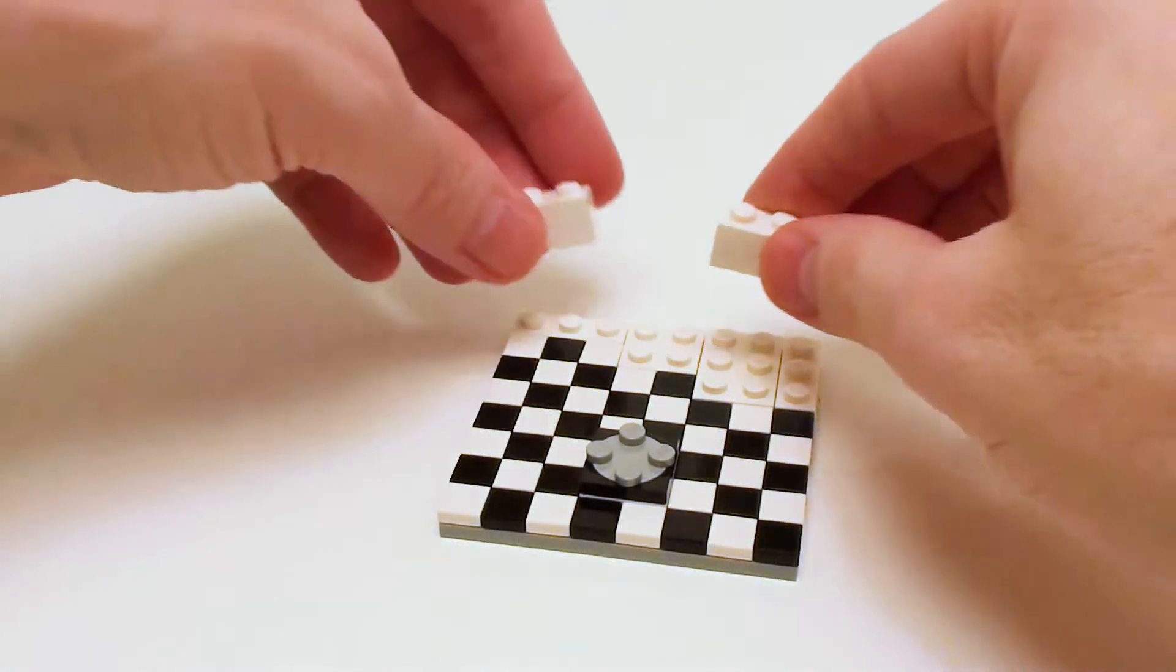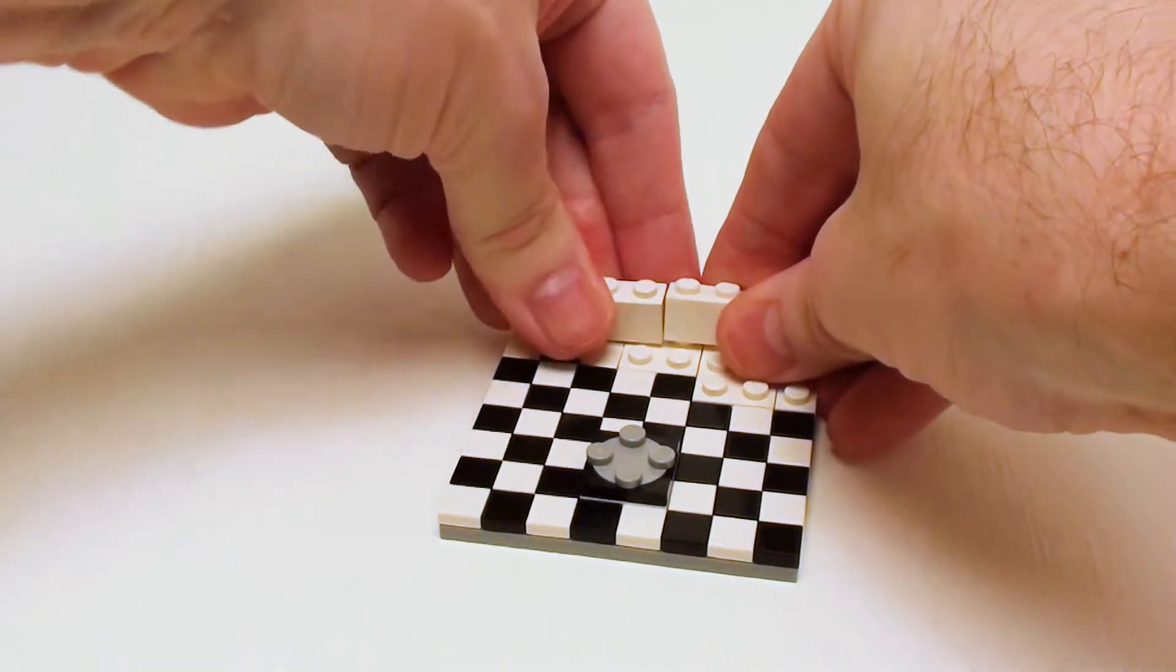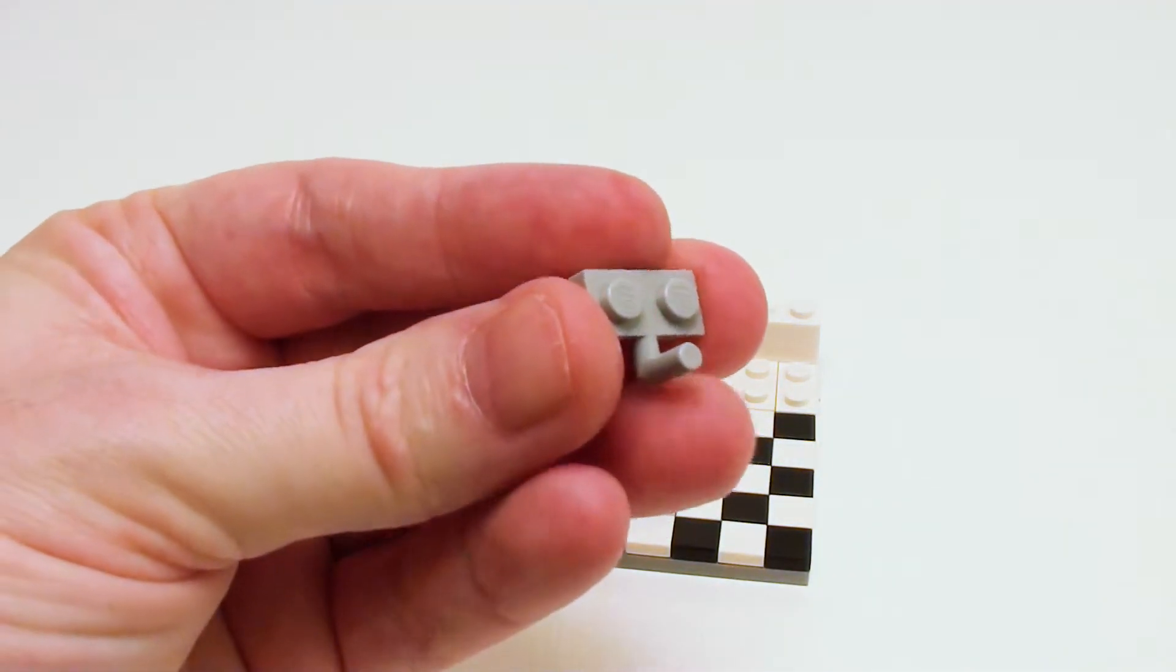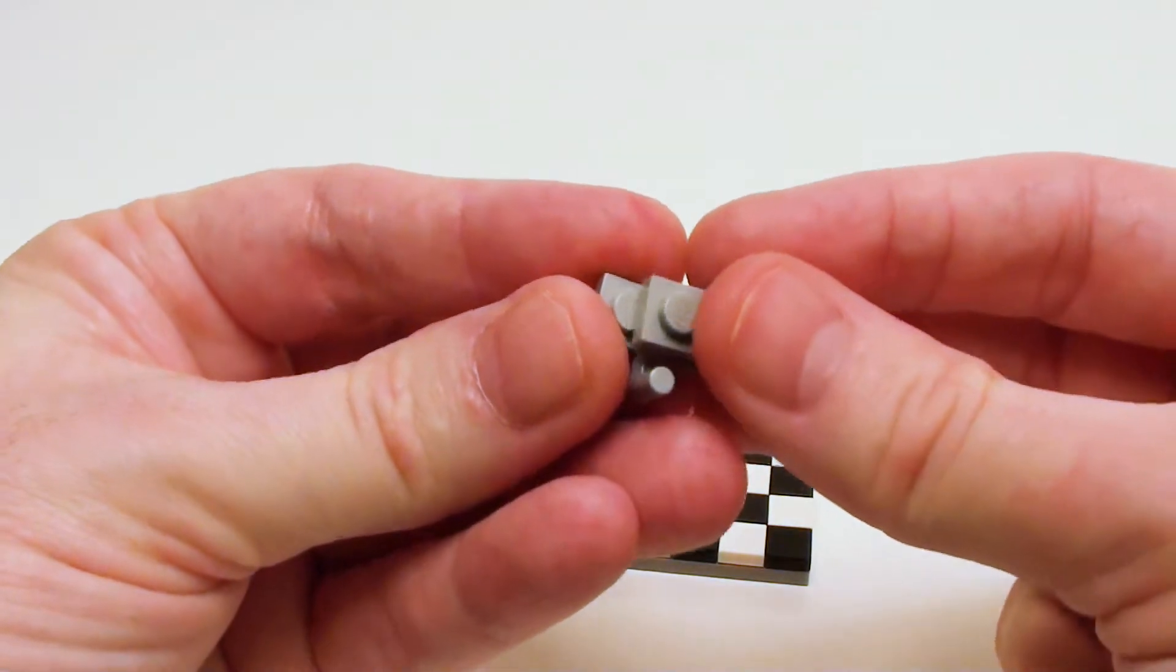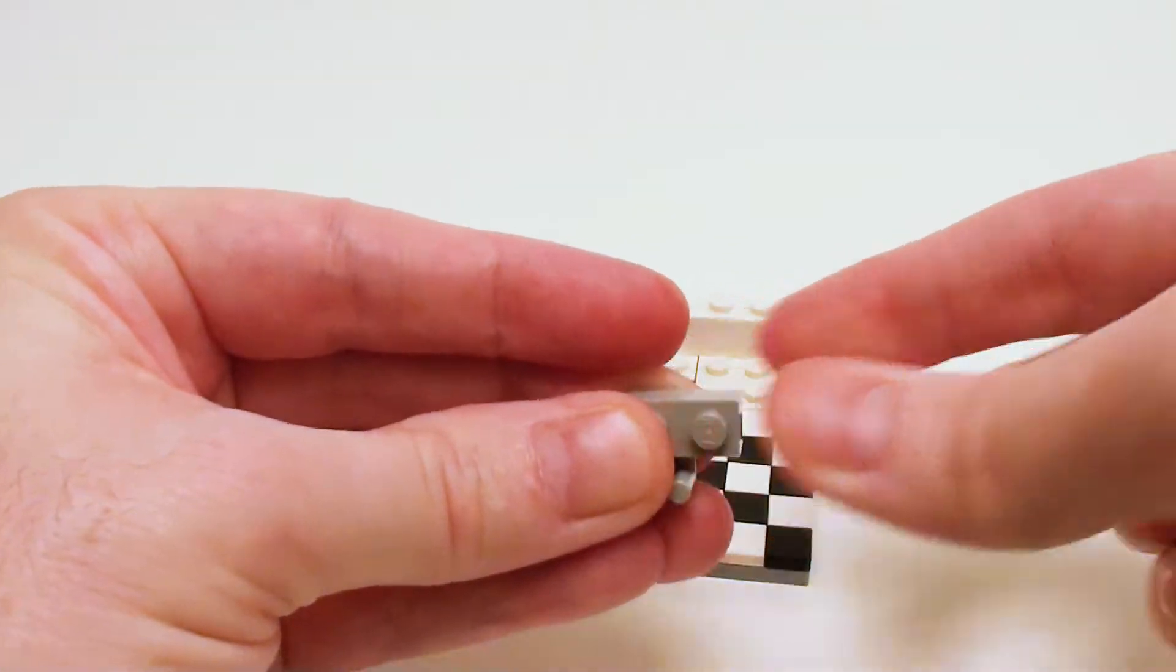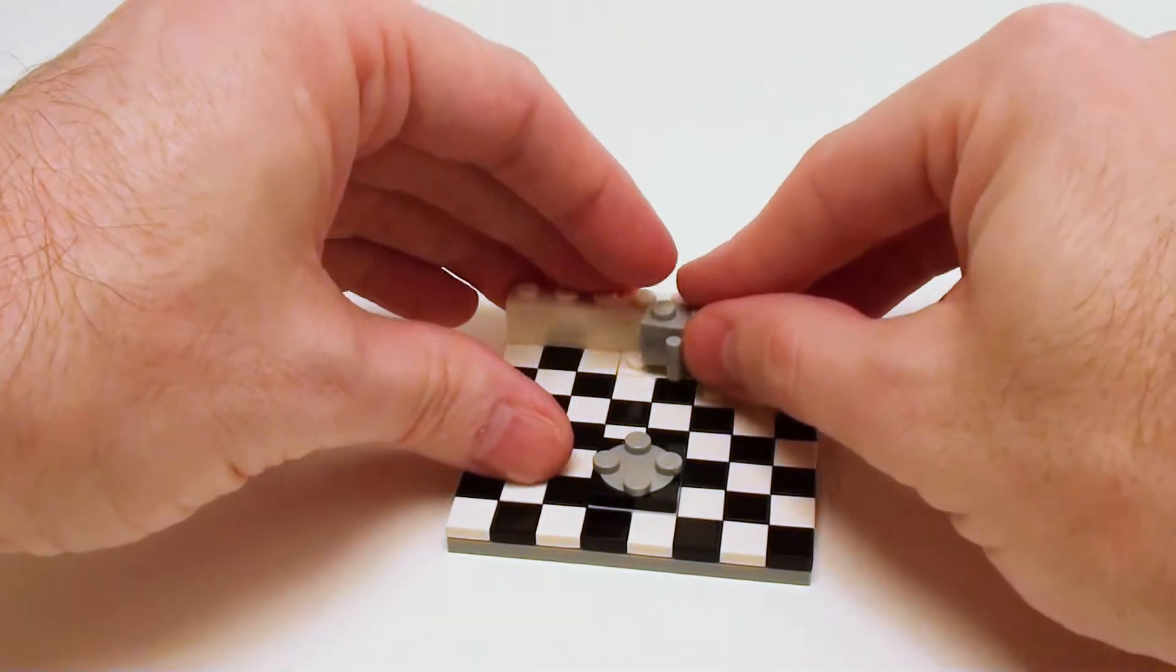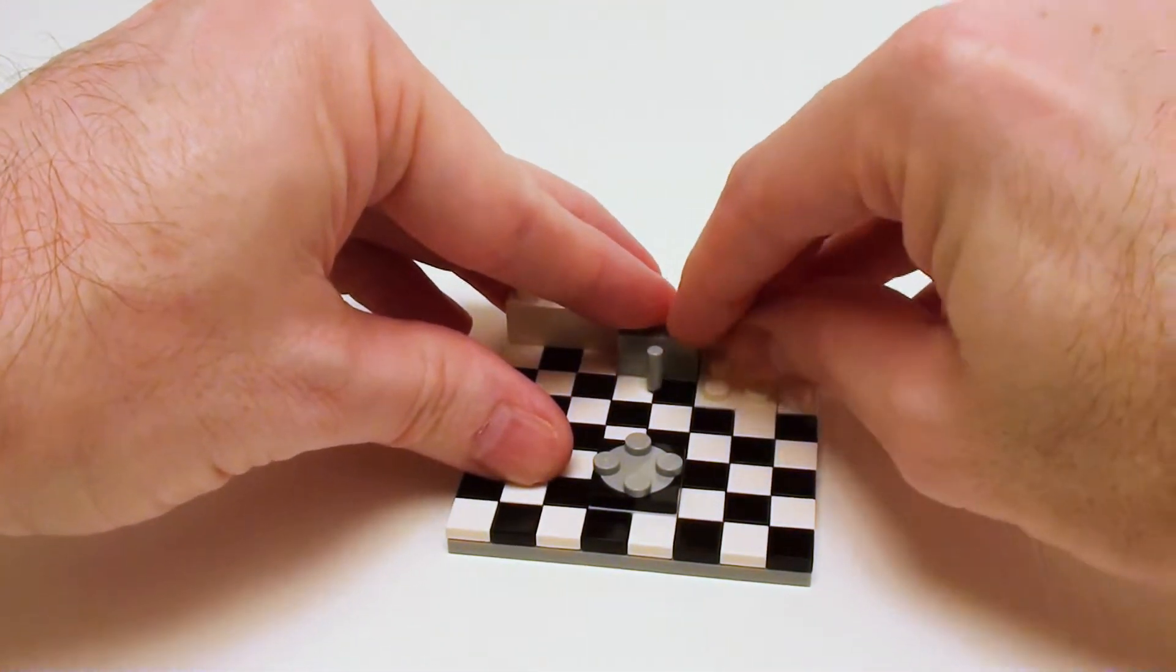For the wall construction, place down a pair of 1 by 4 bricks. Take a 1 by 2 modified plate with upright stick. Place two 1 by 2 plates on the top. This assembly is going to be used as a little drain pipe for the sink.